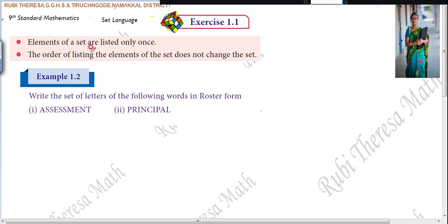The order of listing the elements of the set does not change the set. You can change the order. Changing the order won't affect the set. The order of listing the elements of the set does not change the set. Let us check these two points in this example.